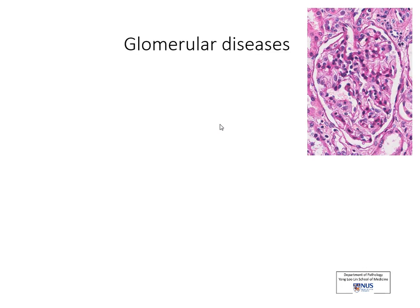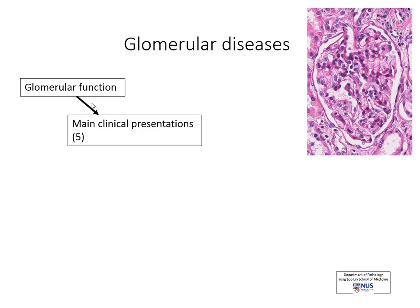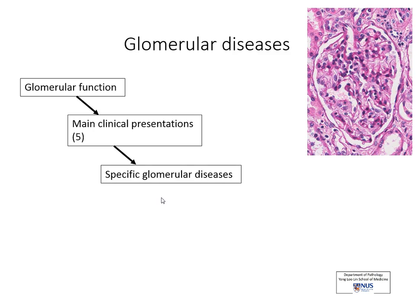We're going to look at glomerular diseases here. It's a rather confusing topic, so we're going to be very systematic about it and start by looking at glomerular function, just as it was presented in your lecture notes. Then we will correlate glomerular function with the main clinical presentations of glomerular diseases. There are five main clinical presentations, and for each one we will look at the specific glomerular disease associated with it.